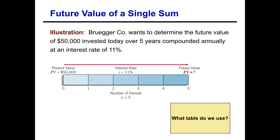Here we have Brueger Company. They want to determine the future value of $50,000 invested today over five years, compounded annually at an interest rate of 11%. When we look at a question like this, we have to ask ourselves a few questions.